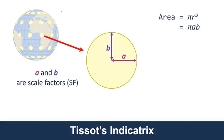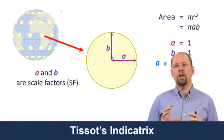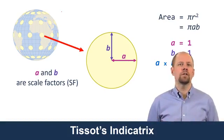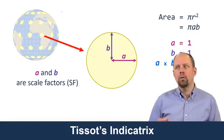Since area equals pi times r squared, for a circle that means area equals pi times A times B, where A and B are both the radius. So on the reference globe, A equals 1, B equals 1, and A times B equals 1 as well. This is just a way of quantifying our description of the distortion — making it more systematic and quantifiable rather than just saying there's more of it here or less of it there.